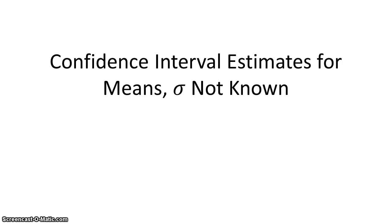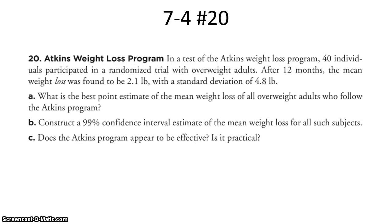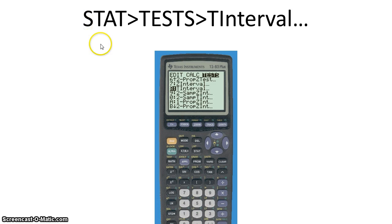Now, suppose we don't know the population standard deviation, requiring us to use the Student's t-distribution. For the Atkins weight loss program problem: in a test of the Atkins weight loss program, 40 individuals participated in a randomized trial with overweight adults. After 12 months, the mean weight loss was found to be 2.1 pounds with a standard deviation of 4.8 pounds. The best point estimate is the sample mean. To construct a 99% confidence interval estimate of the mean weight loss, we use Stat, Tests, T Interval.